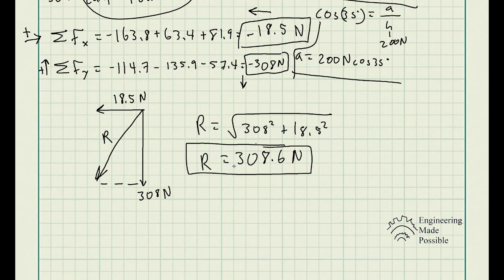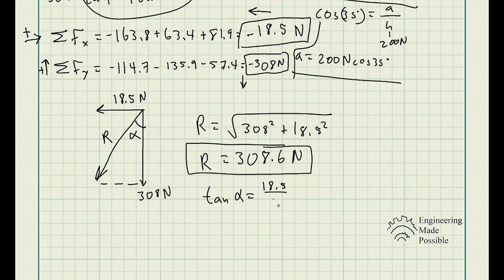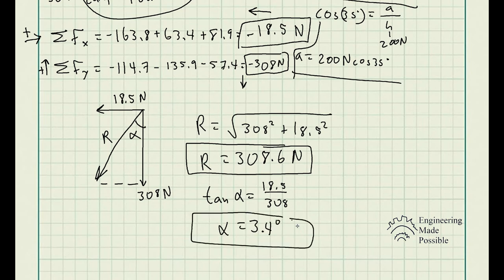Now we need to find the angle. What is the angle with respect to the vertical axis? Let's call it alpha. Using SOHCAHTOA, we can use tangent: tangent of alpha equals opposite over adjacent, which is 18.5 over 308. Using the inverse tangent to solve for alpha, we get the angle equal to 3.4 degrees with respect to the vertical axis.